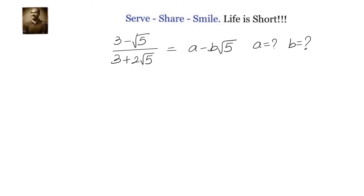Hello friends, let us look at this problem related to 9th grade number systems. We have been given 3 minus root 5 divided by 3 plus 2 root 5 equals to a minus b root 5, and we need to calculate the values of a and b.